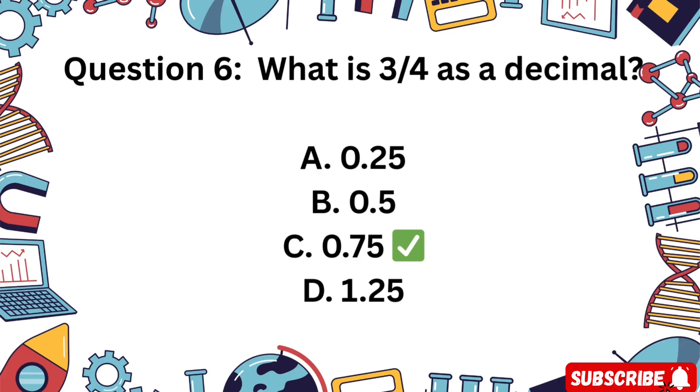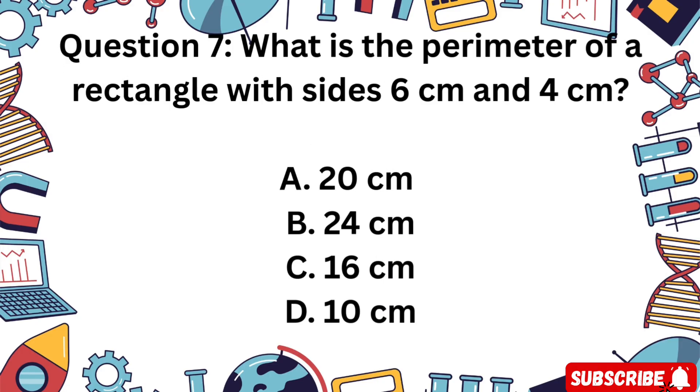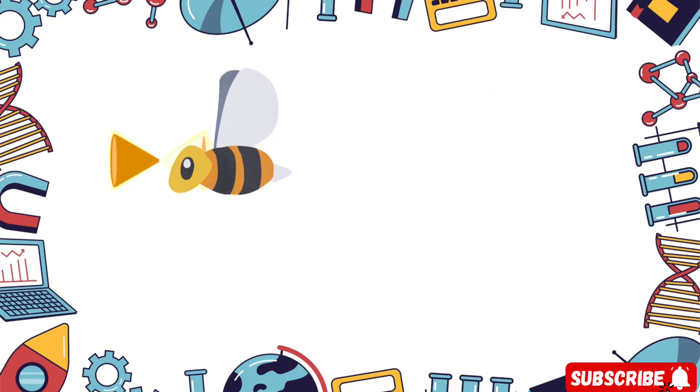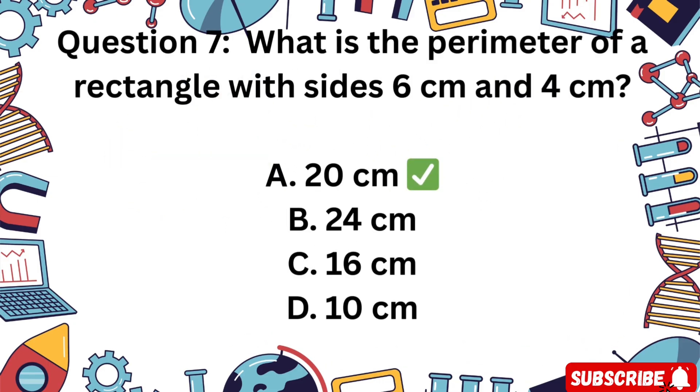Question 7: What is the perimeter of a rectangle with sides 6 cm and 4 cm? Is it A 20 cm, B 24 cm, C 16 cm, or D 10 cm? Awesome. 6 plus 4 plus 6 plus 4 equals 20.